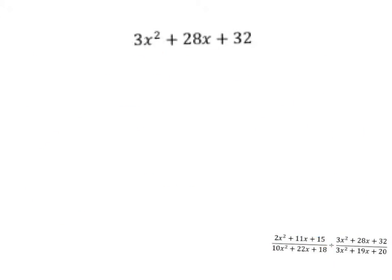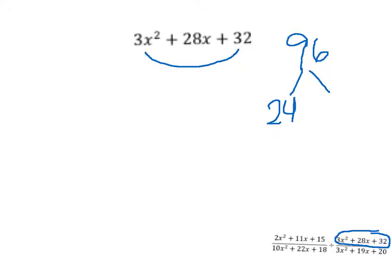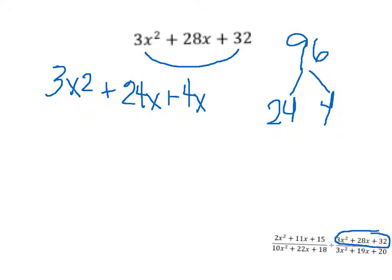For the second numerator, you multiply 3 and 32 to get 96. The factor pair of 96 that works is 24 and 4. You group that back into the problem to get 3x² + 24x + 4x + 32.